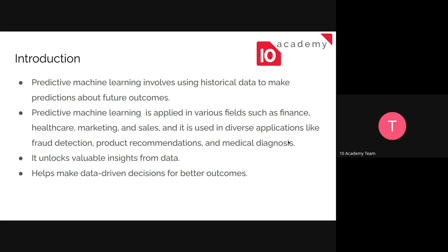Some of the applications are fraud detection. I think we all remember the incident of CBE Bank. So if they were using machine learning algorithms in their systems, whenever someone withdraws a big amount of money, or even outside of their usual behavior — like if someone usually withdraws a couple of thousand per week and that person exceeds, spending much more than that — the machine learning algorithm can point it out.